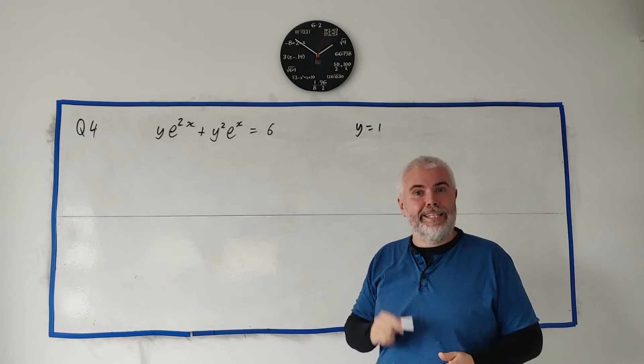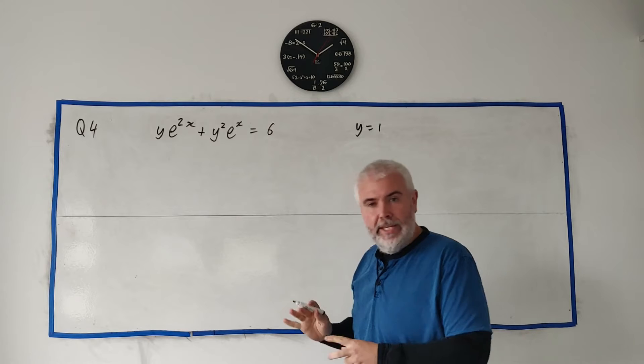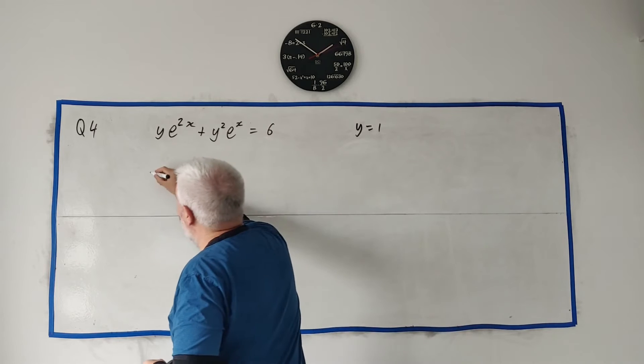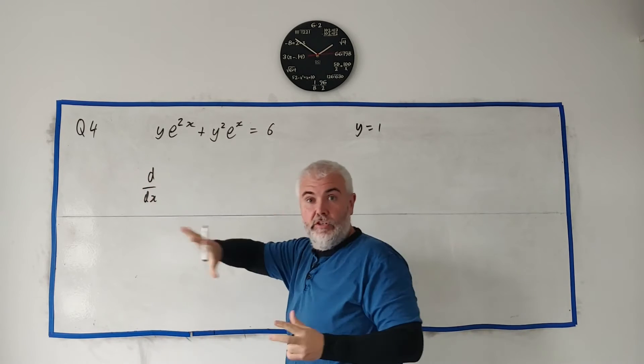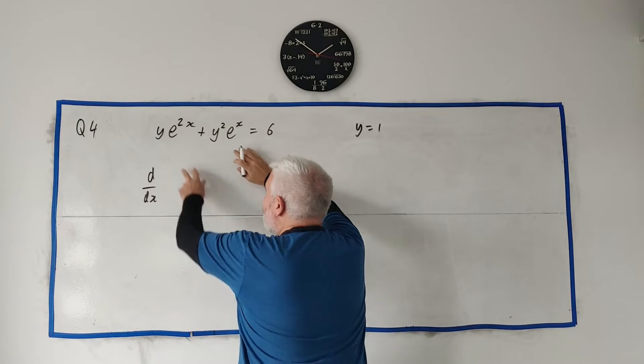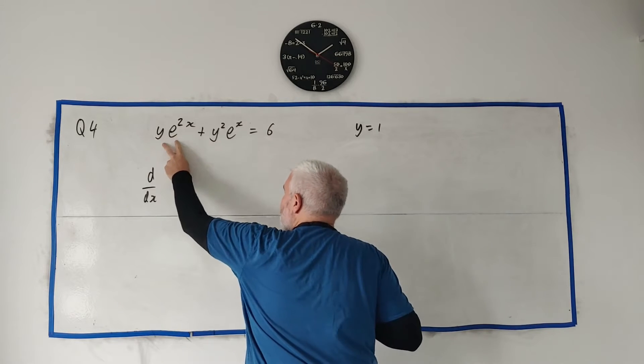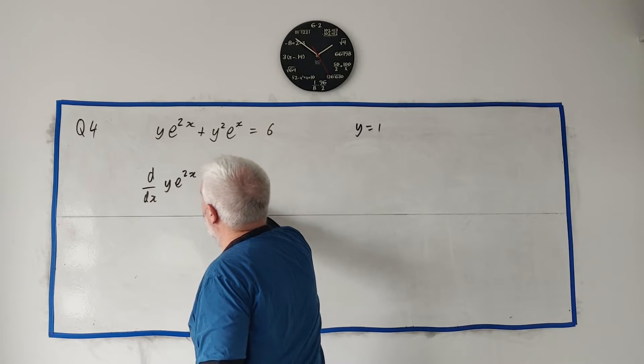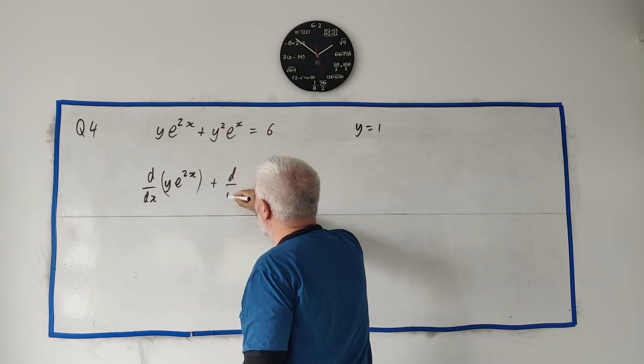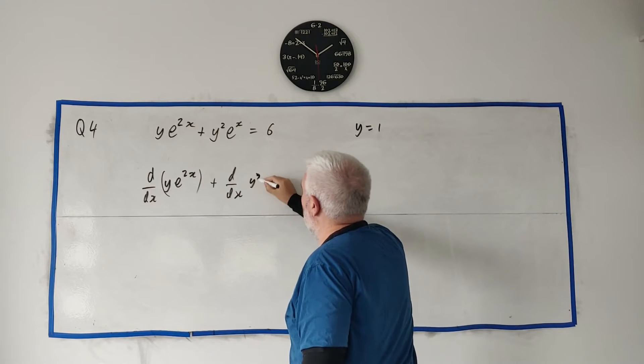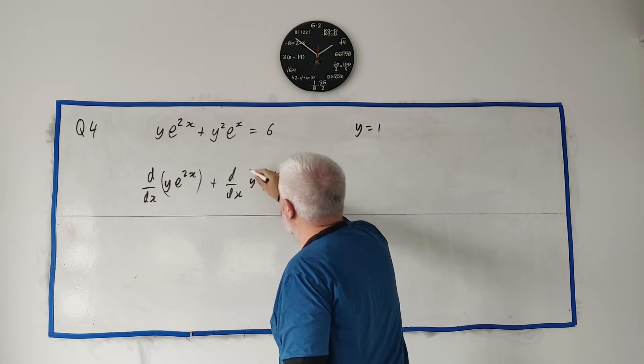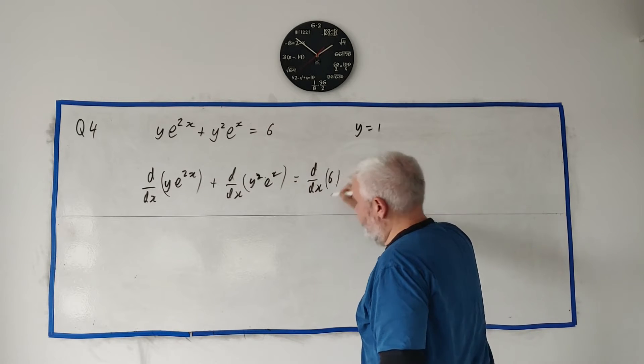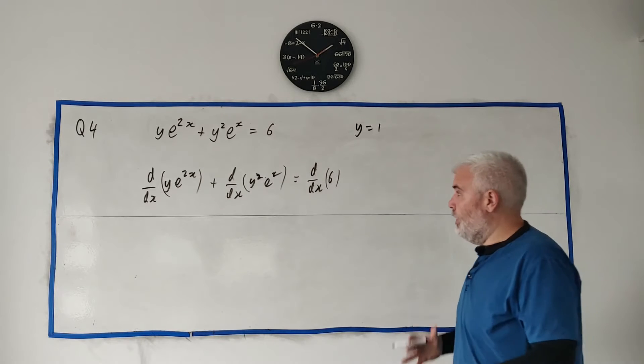So why don't we use implicit differentiation? So what that means is, it means differentiating both sides. Taking all of the left and differentiating it. And I'm going to write that like this: d/dx. That's what I'm going to use as differentiate. When I differentiate the left, it works like multiply. I differentiate this and I differentiate this. So we get d/dx of y e^(2x) plus the derivative of y^2 e^x. And on the right side, I still have to differentiate that. d/dx of 6. So that's what implicit differentiation means to us.